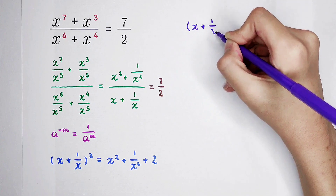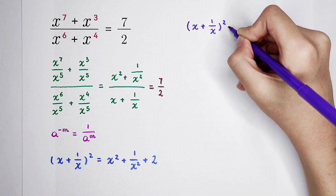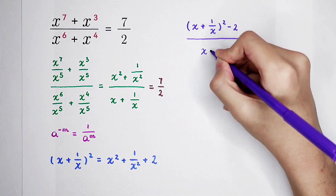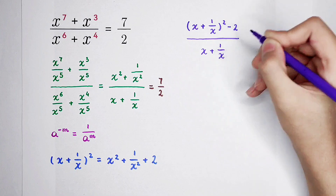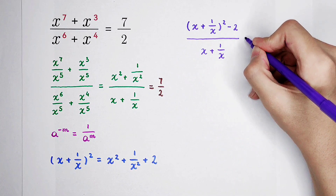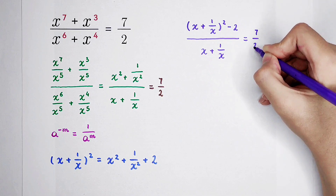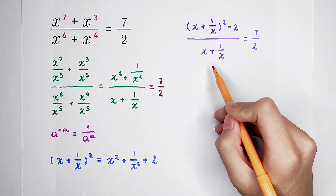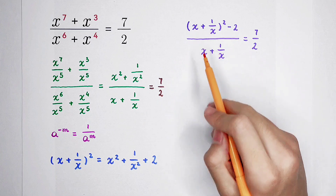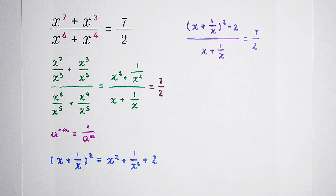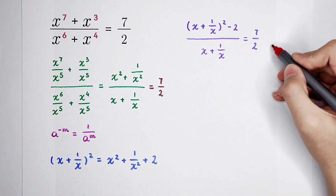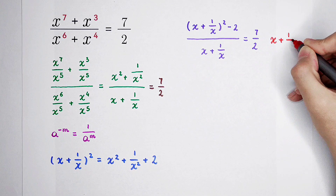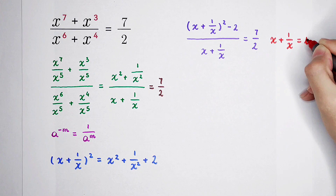So we write it as: x plus 1 over x, all squared, minus 2, divided by x plus 1 over x, equals 7 over 2. We can see that x plus 1 over x appears in both the numerator and denominator, so now we use substitution: let t equal x plus 1 over x.